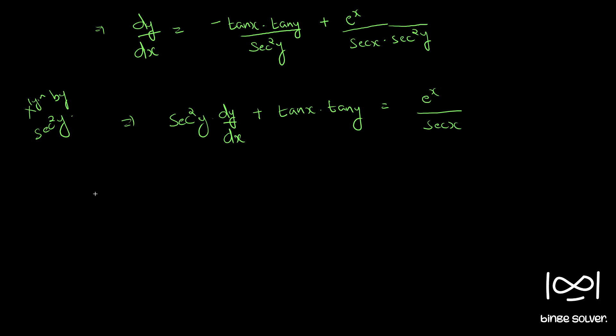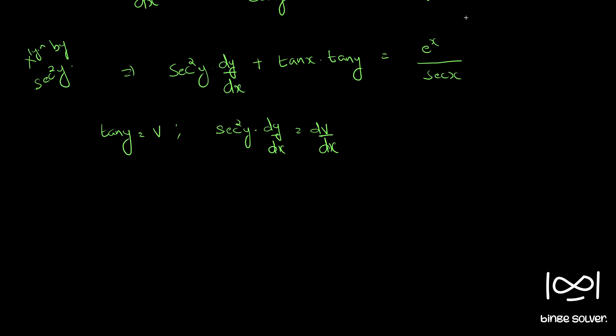So now put tan y equal to v. If you differentiate both sides we have sec square y into dy by dx is equal to dv by dx. So we are using, let's call this equation 1, and let's call this 2 and this 3.